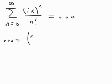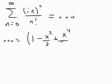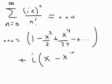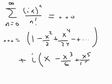There's the real part, 1 minus x squared over 2 plus x to the 4th over 24, etc. Plus the imaginary part, x minus x cubed over 6 plus x to the 5th over 120, etc.